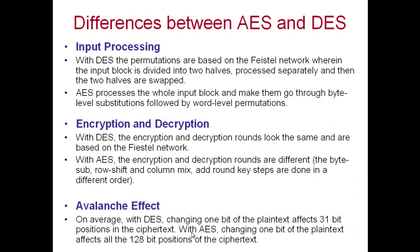With respect to the avalanche effect: in DES, changing one bit in the plain text affects on average 31 bit positions in the 64-bit ciphertext block — roughly half the bits. In AES, changing even one bit in the plain text affects all 128 bits of the ciphertext block. So the diffusion effect is more prominent in AES.